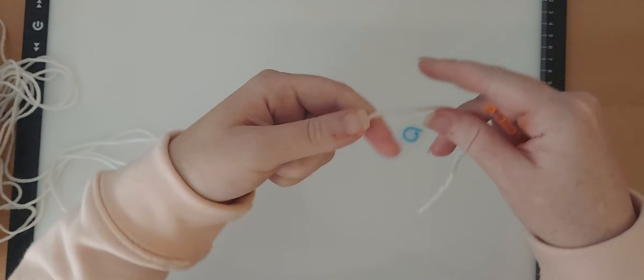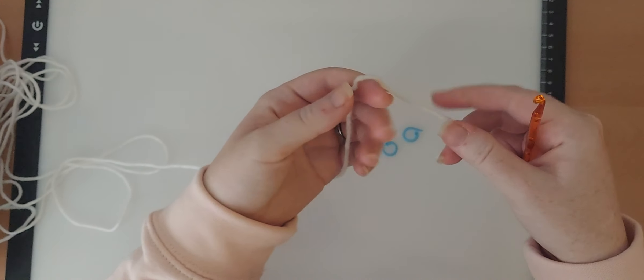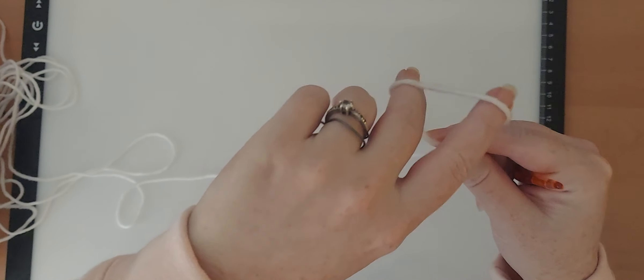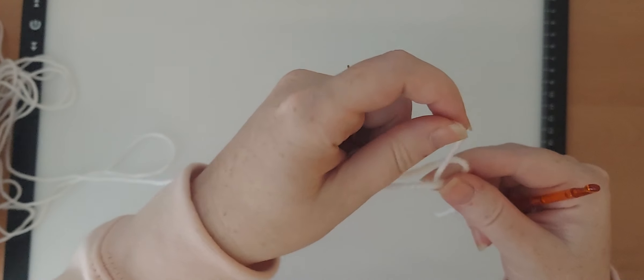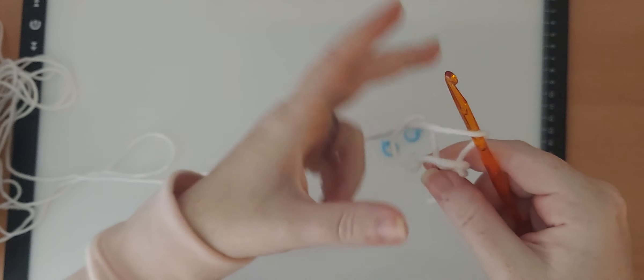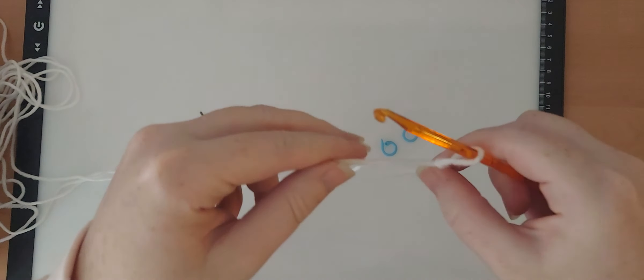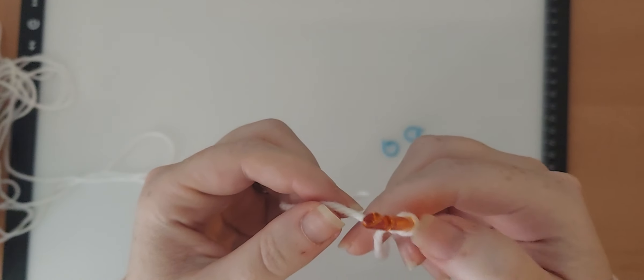In order to start any project that works in rows, you're going to need to make a slipknot. You cross the yarn over like this, hold it, grab down in here, pull up a loop, put the hook into that loop, and then you make a slipknot like that. Now, this slipknot does not ever count as a stitch.